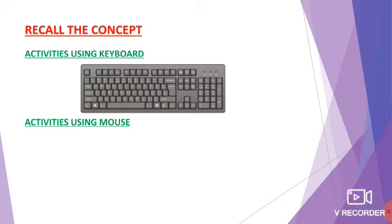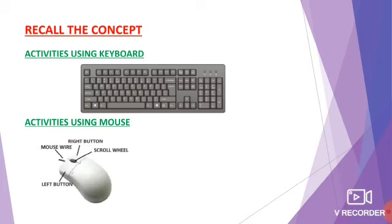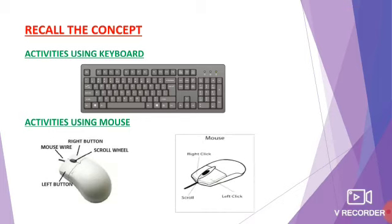Next, activities using mouse. In that, what we have learnt? What is the use of the mouse and how many buttons it has? Then we have learnt the functions of clicking — how many types of clicking: left click, right click, double click, and what is the use of the scroll button? These are all the things we have learnt last week. Have you all remembered, children? Yes. Shall we move to today's concept?